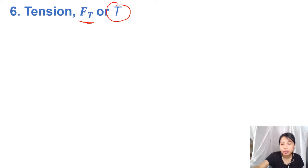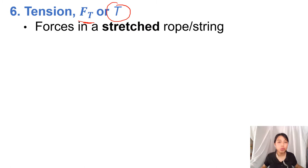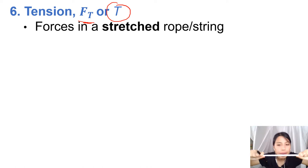Tension forces are basically forces in a stretched rope or string. I have this little white rope here. If I stretch it, and assume the rope is massless, there's some tension spread out from every section of this rope — tension, tension, tension. The tension force is stretched out along this whole thing.